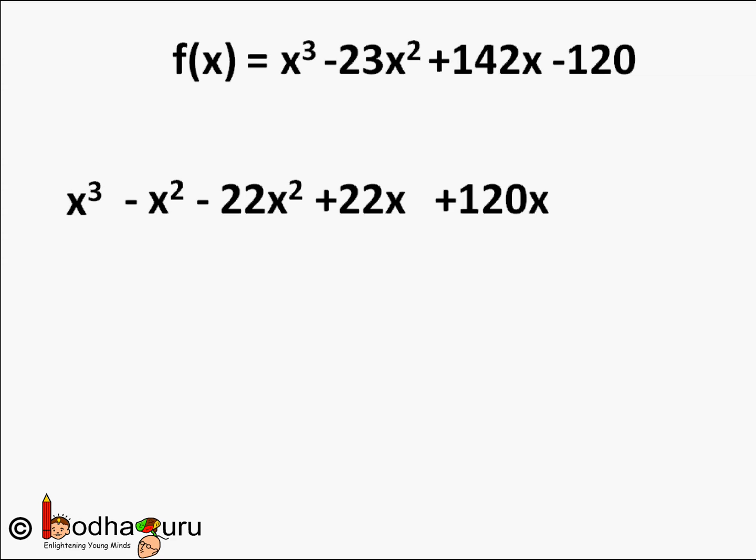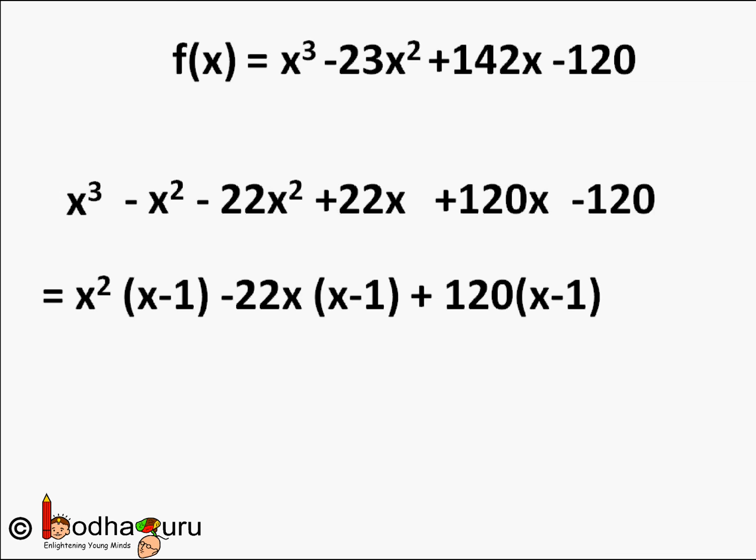We break down x³ - 23x² + 142x - 120 into fragments such that each fragment has (x - 1) as a factor. Starting from the leftmost term x³, we rewrite -23x² as -x² - 22x², which is the same as -23x². Then from x³ - x² we can take (x - 1) as the common factor, giving x²(x - 1).